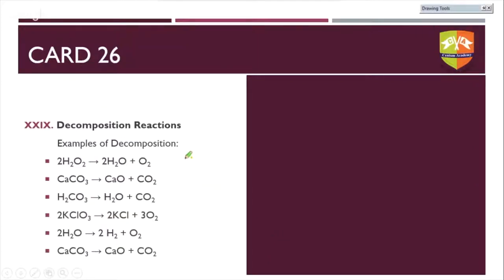Examples of decomposition reactions — most are the reverse of combination reactions: H₂O₂ → H₂O + O₂ (reverse of the H₂O and O₂ combining); CaCO₃ → CaO + CO₂. This is a decomposition reaction where a complex compound gives two simpler compounds. In some decomposition reactions, a complex compound gives elemental forms.